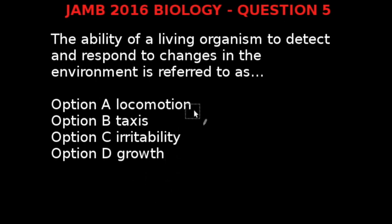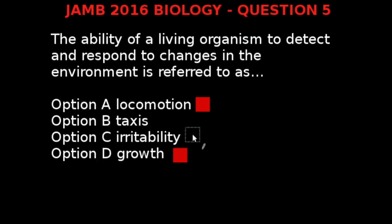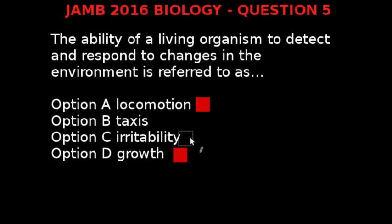The answer is not Option A (locomotion) or Option D (growth). It lies between Option B and Option C. Irritability is the ability of a cell to respond to stimuli, while Taxis is a form of irritability involving the movement of an organism in response to stimuli. For a response to be called taxis, movement must be involved. Irritability is used generally to define the detection and response of an organism to stimuli. Therefore, our correct answer is Option C, Irritability.